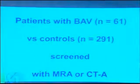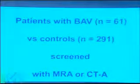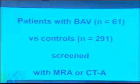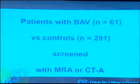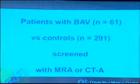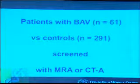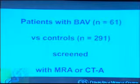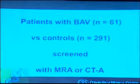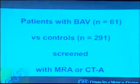What we did is we looked at 61 people with a bicuspid aortic valve — all adults — and we screened them with either an MR angiogram or a CT angiogram. Then I compared that to a group of people who came to our office with either a brain tumor, or people who came in with headache but not the typical headache of an aneurysm. That was a group of 291 patients.